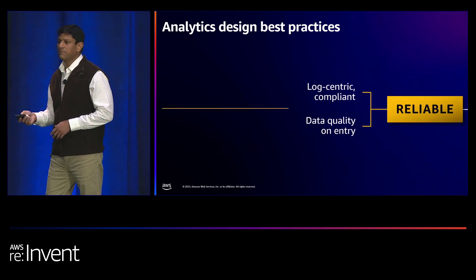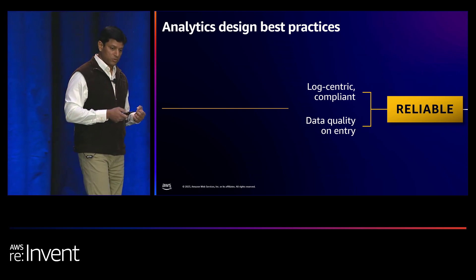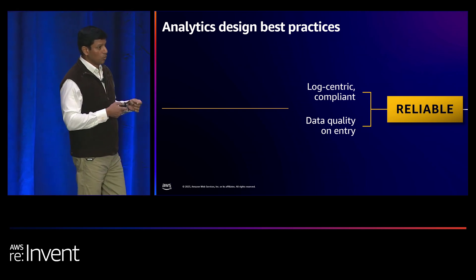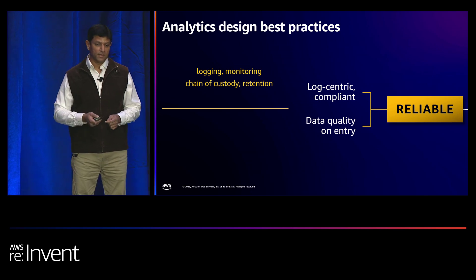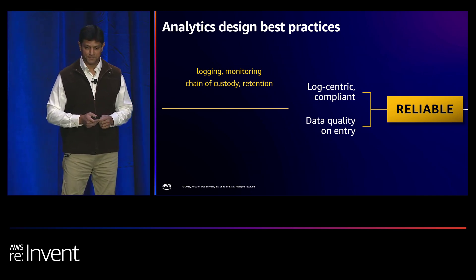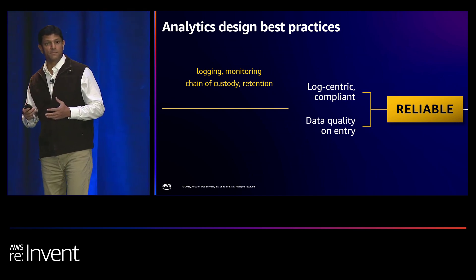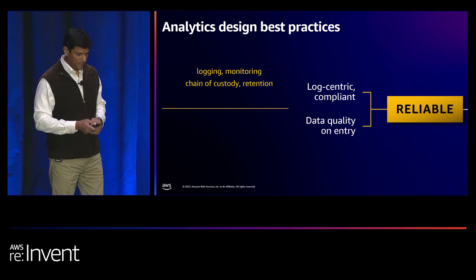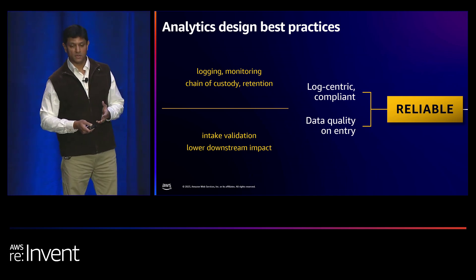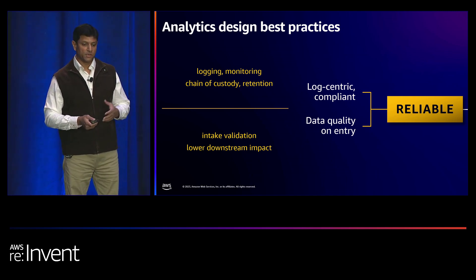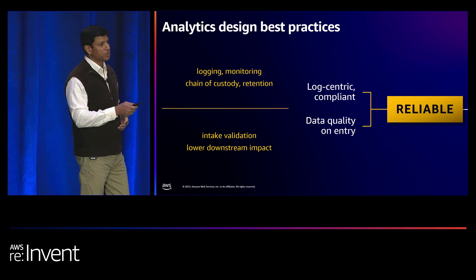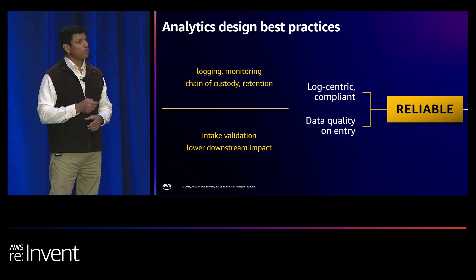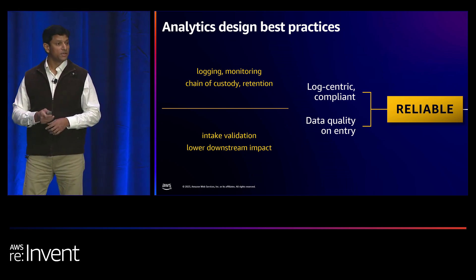Reliability of a data pipeline is enhanced by its ability to document everything that matters — errors, events, notifications. Lineage provides a way to manage your data's chain of custody. Ensuring compliance and setting proper retention policies raises the reliability bar. A reliable data pipeline also has safeguards to prevent your data lake from becoming a data swamp. Ensuring data quality at ingestion prevents corrupt data from flowing upstream. The data quality feature of AWS Glue helps validate your data during source intake.